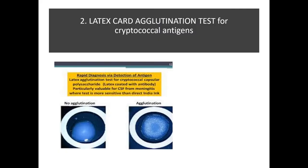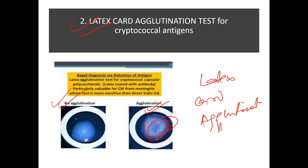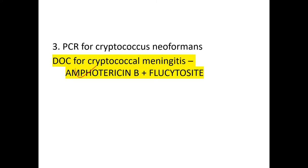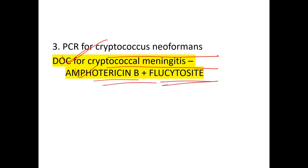The latex card agglutination test is done for cryptococcal antigens — one well shows no agglutination and another shows agglutination. PCR is also done for Cryptococcus neoformans. The drug of choice for cryptococcal meningitis is Amphotericin B plus flucytosine.